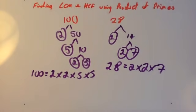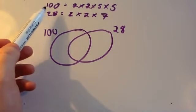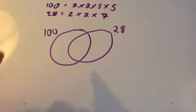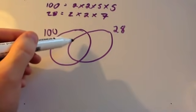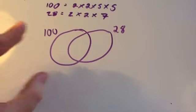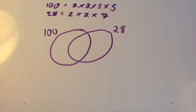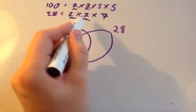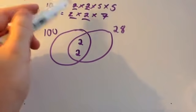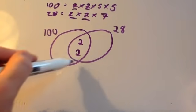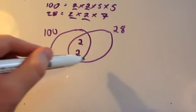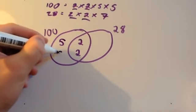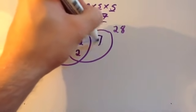We're now going to draw the Venn diagram and put those numbers in there. We've got 100 as 2 times 2 times 5 times 5, and 28 as 2 times 2 times 7. Drawing one circle for 100 and one for 28 — let's see what they share. The 100 has two 2s and 28 has two 2s, so you put two 2s in the middle. 100 also has 5 times 5, so you put two 5s on the 100 side. And 28 has a 7, so you put a 7 on the 28 side.